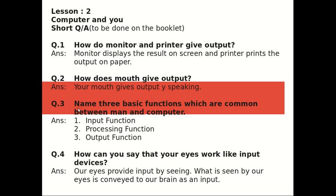Question number three: Name three basic functions which are common between man and computer. The three basic functions are input, processing, and output — the brain processes the input and the mouth gives the output, just like a computer.